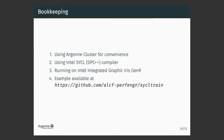A little bookkeeping: I will use the Arden cluster for convenience because I have my setup here. I will use the Intel SYCL DPC++ compiler, running on Intel Iris Gen9 graphics, and I think the host system is a Skylake. All the examples — if you want to follow along, or if you already happen to have a SYCL compiler — are available on the GitHub page.